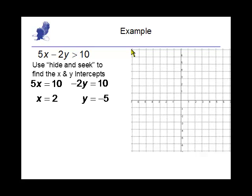Since this equation is in standard form, the quickest way to do that would be to use the hide-and-seek method. If I hide the minus 2y, I get my x-intercept of 2. And if I hide the 5x, I get my y-intercept of negative 5.